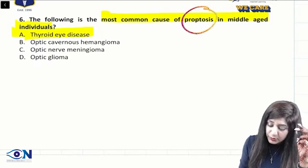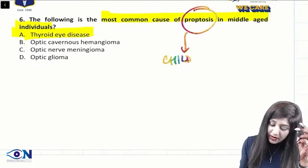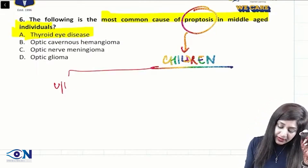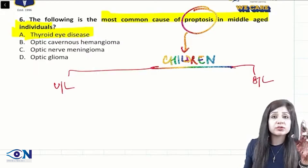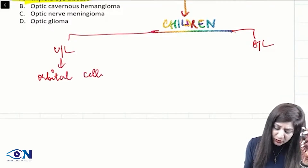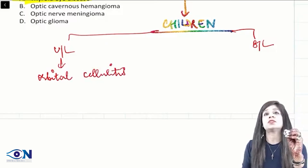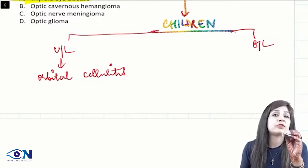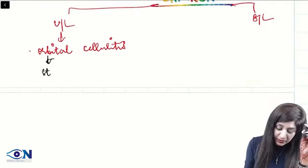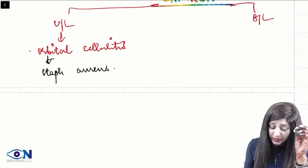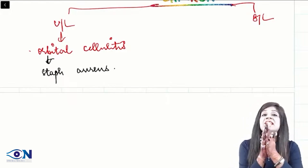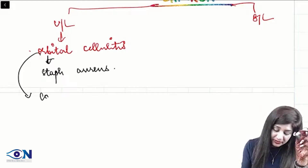When talking about proptosis in children, the causes are different. You have to determine if it is unilateral or bilateral proptosis. If it is unilateral proptosis, look for orbital cellulitis. The main cause of orbital cellulitis is Staph aureus, presenting with unilateral proptosis.